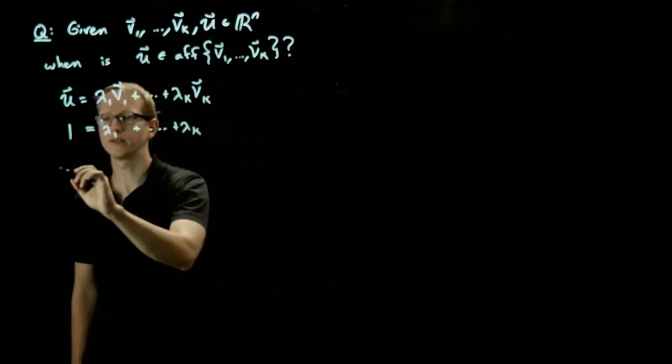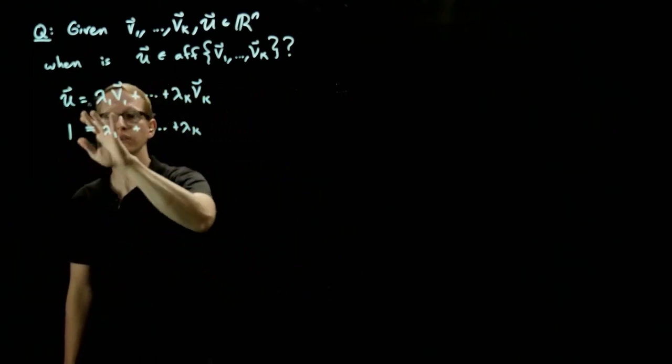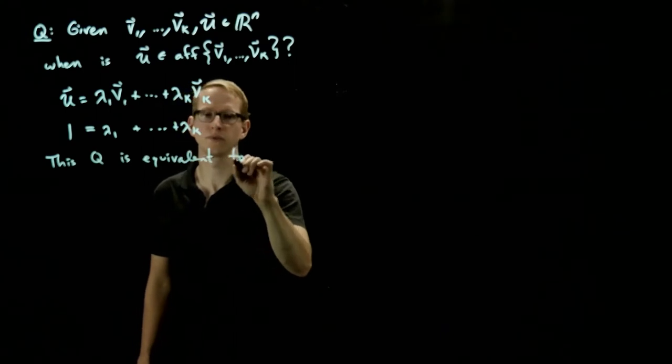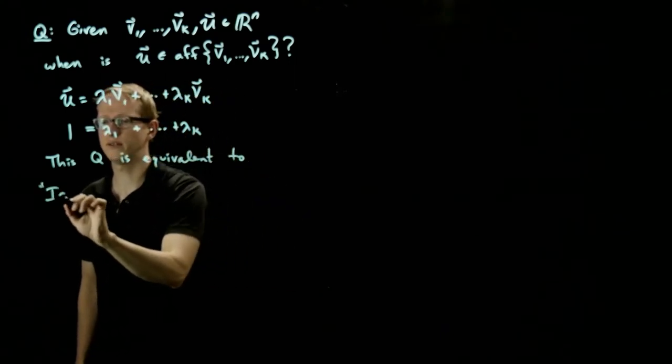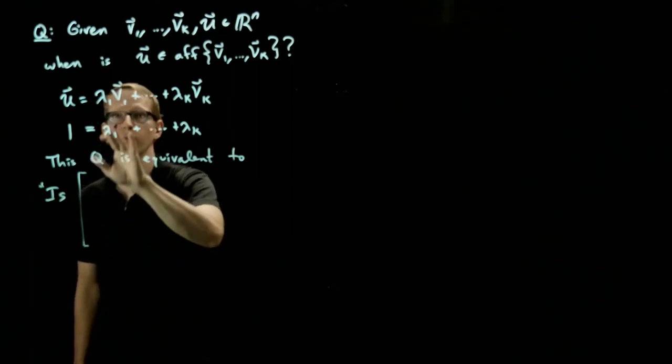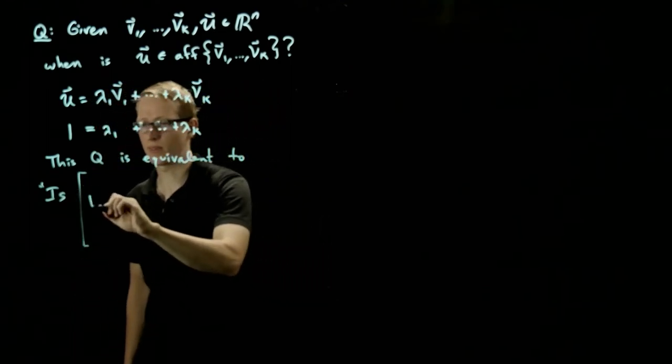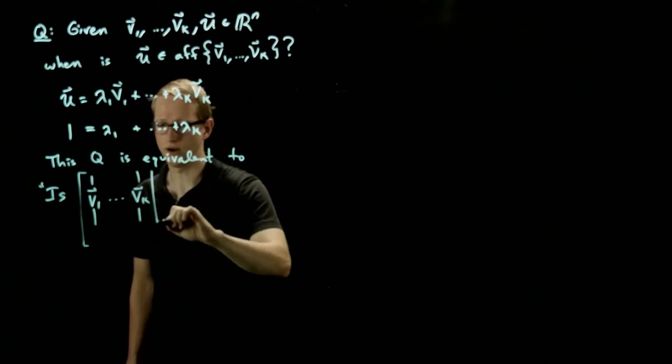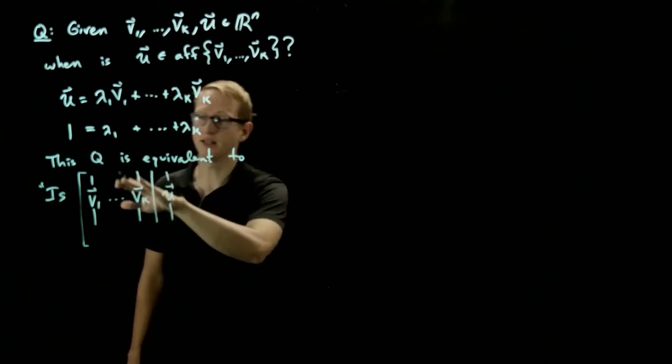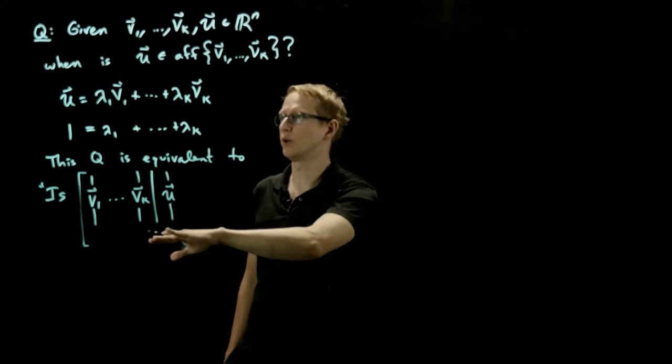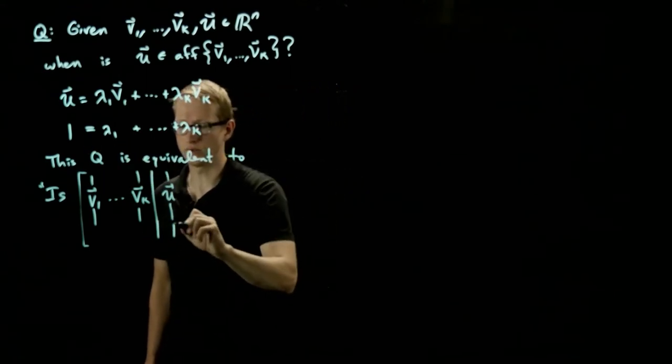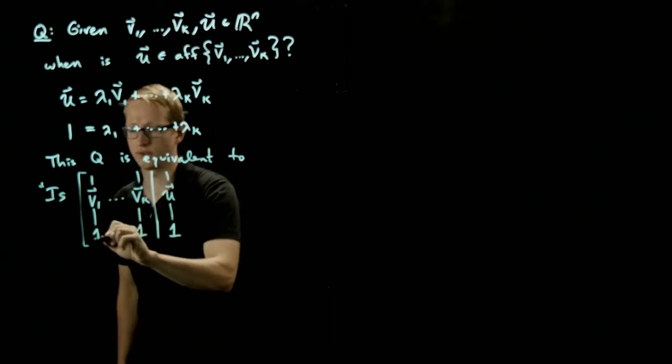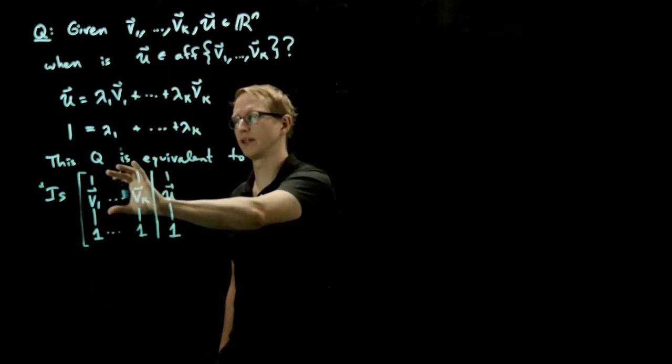And therefore, if we want to solve this system, this question is equivalent to the following one, which is: is the augmented matrix where we take our vectors v1 through vk, augmented with the vector u. But in addition, augment this further by one additional row, stating that 1 equals, so now this is the number 1, equals 1 dot dot dot 1. So this vector is just denoting the fact that it could have several entries.